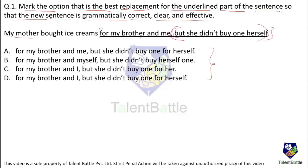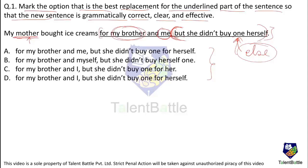The sentence wants to say that mother bought ice creams for my brother and me, but she didn't get an ice cream for herself. However, 'she didn't buy one herself' means someone else bought the ice cream and gave it to her — implying my mother did not pay for the ice cream. That is not the intended meaning.